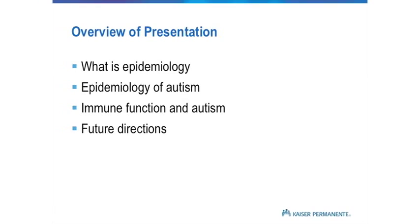I decided to talk about the epidemiology of autism, specifically the work we're doing focused on the immune system and autism and what that tells us about etiology. I hope to take you through a journey about how we go about studying autism through the lens of an epidemiologist. I'll talk about what epidemiology is, a brief description of the epidemiology of autism, immune function in autism, and future directions.